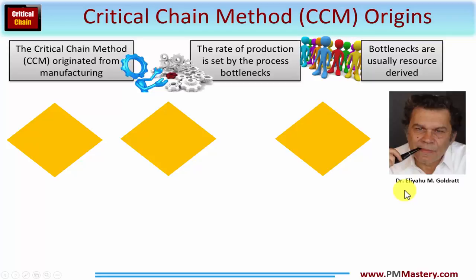The purpose of these two videos is to take you through step by step in a structured manner an overview of the techniques and approaches necessary. The critical chain method originated from manufacturing, where the rate of production is set by any bottlenecks within the process — and bottlenecks are usually resource derived, by which I mean human resource derived. You'll immediately start to see that resource limitations are also a bone of contention within your project.